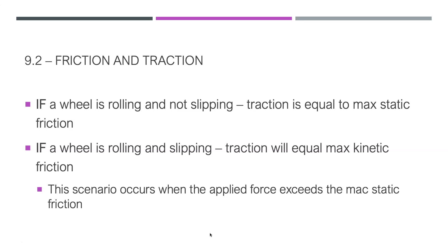If a wheel is rolling and not slipping — think slower-moving robot — traction is going to equal max static friction. If a wheel is rolling and slipping, then traction is going to be closer to kinetic friction. Both of these occur regularly in robotic interactions. The slipping scenario only happens when the applied torque is greater than the static friction that was present initially.